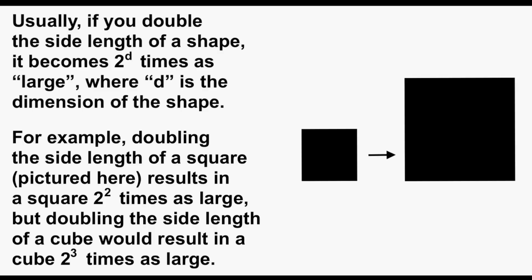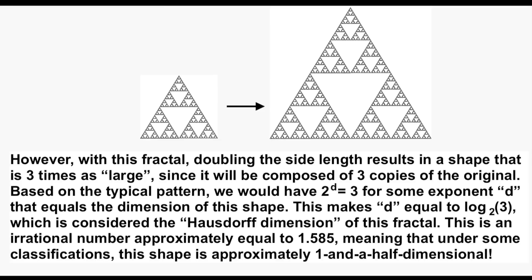Like doubling the side length of a 2D square results in something two to the second power times as big, or doubling the side length of a 3D cube results in something with two to the third power of the size of the original. And in this case, if we double the side length of the fractal, we would end up with three copies of itself.